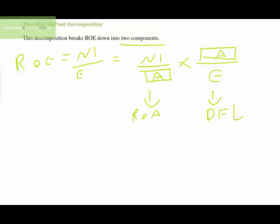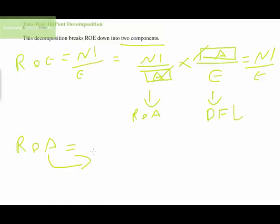Return on assets measures the percentage of income generated from the assets a company owns — the return earned on its own assets. I prefer to say that return on assets actually reflects the company's strategy. We'll answer why in a moment. The degree of financial leverage measures the amount of total assets supported by each unit of equity.